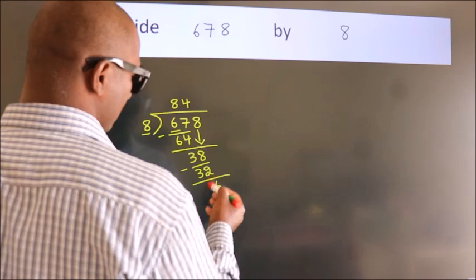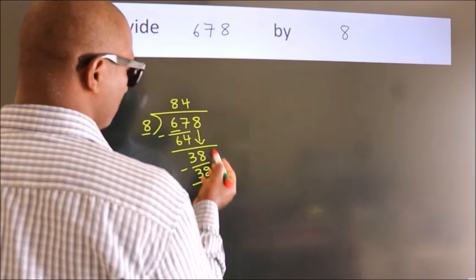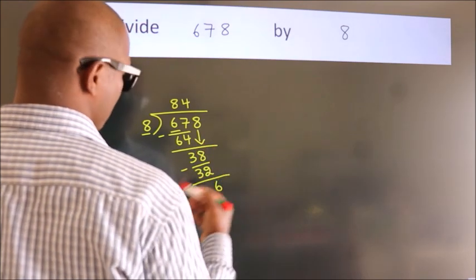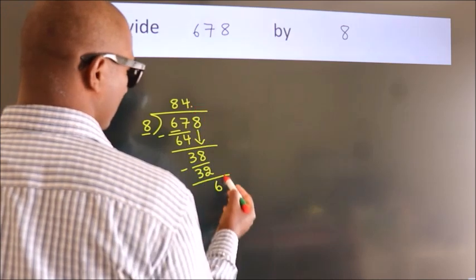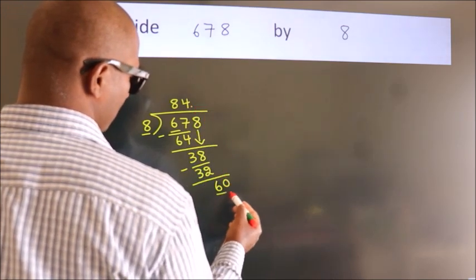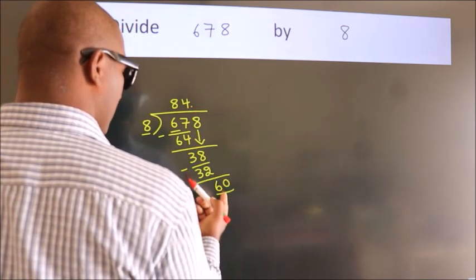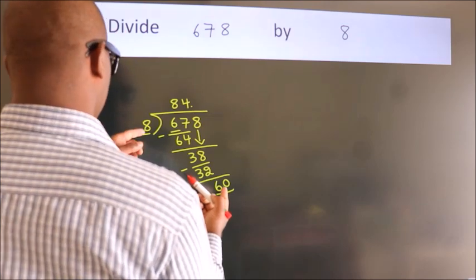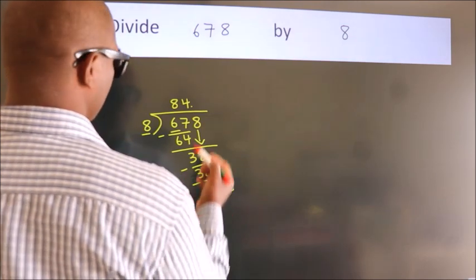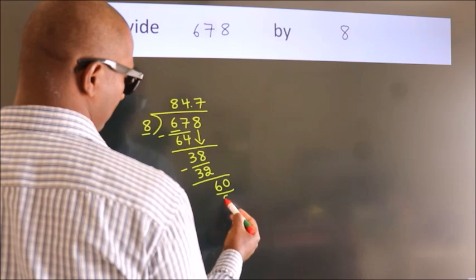After this, there are no more numbers to bring down. So we put a decimal point and take 0 to get 60. A number close to 60 in the 8 table is 8 sevens, 56.